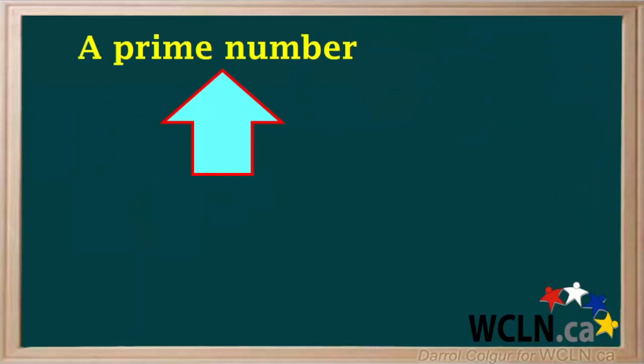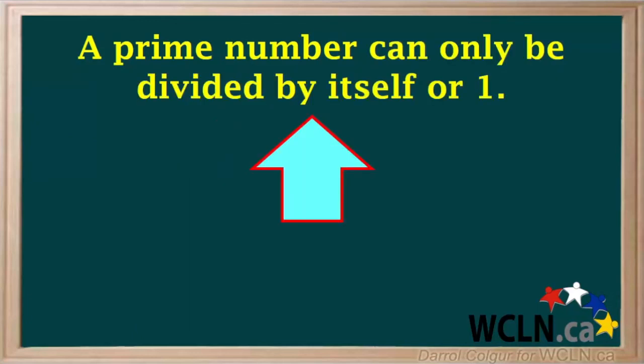First of all, let's review what a prime number is. A prime number is a number that can only be divided by itself or 1, and it must be a whole number greater than 1.